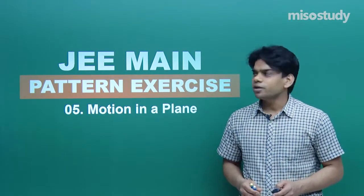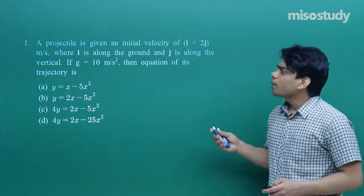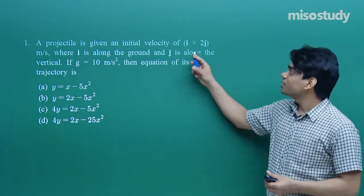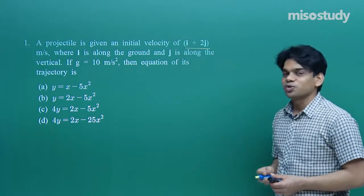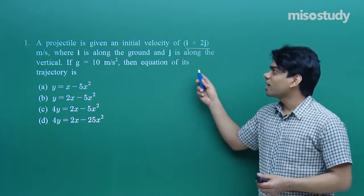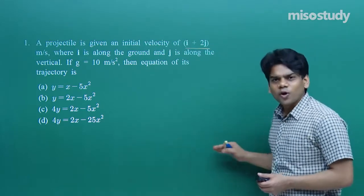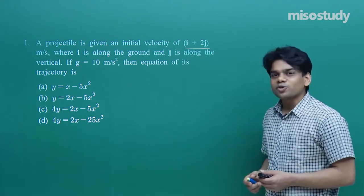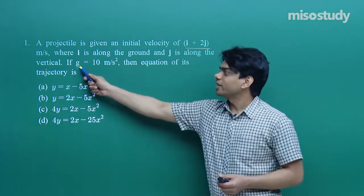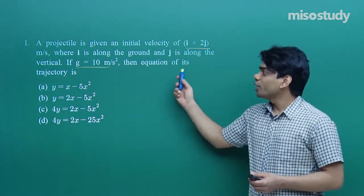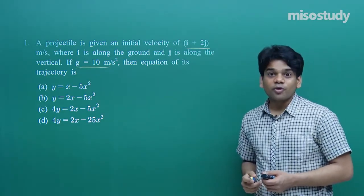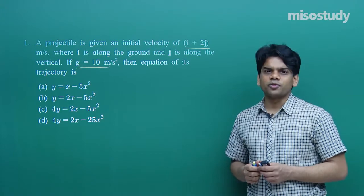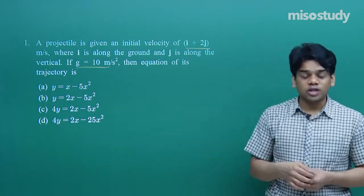Let's go with the first question of the day. A projectile is given an initial velocity of i + 2j meter per second, where i is along the horizontal and j is along the vertical. Given g = 10 m/s², find the equation of its trajectory. I hope you all remember how to find the equation of trajectory.